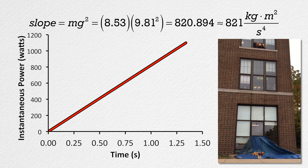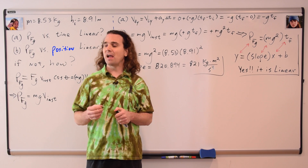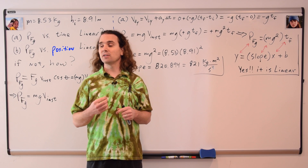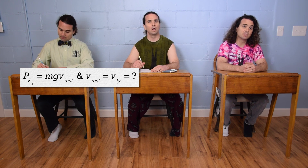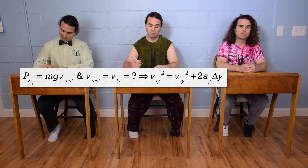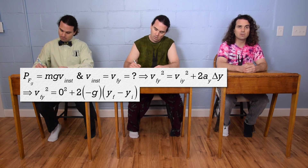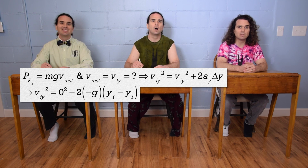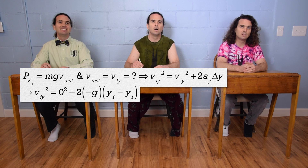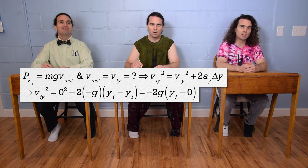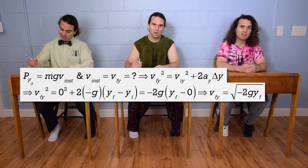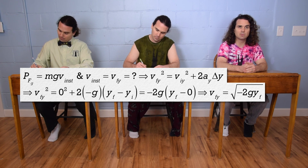On to part B. What about the power being delivered by the force of gravity to the pumpkin as a function of position — is that linear? Now we need the final velocity of the pumpkin in terms of position, not time. Starting with the UAM equation: velocity final squared equals velocity initial squared plus 2 times acceleration times displacement. Initial velocity is zero, acceleration equals negative g, and setting initial position to zero, we get velocity final equals the square root of negative 2g times position final.